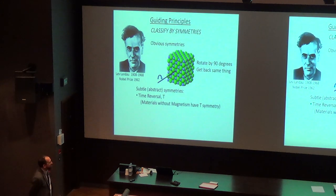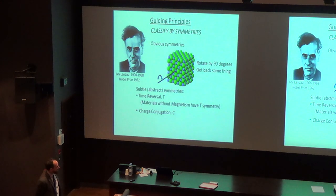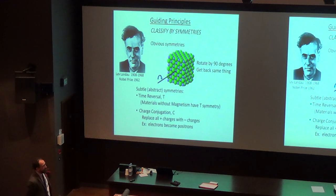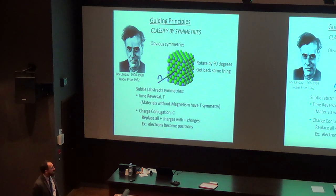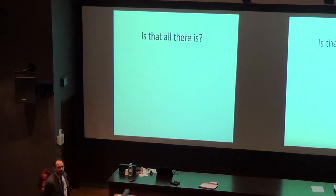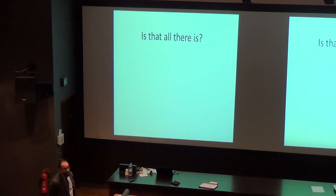In addition to time reversal symmetry, there are other symmetries. One is known as charge conjugation symmetry, called C — basically replacing all positive charges in the material with negative charges, for example if all your electrons turn into positrons. This seems very unnatural, but it turns out that superconductors have this charge conjugation symmetry. So if we're thinking about superconductors, we want to include this symmetry. For many, many years, people thought that symmetry was really all there was to classifying materials. But recently, we've realized there's another guiding principle we should be using, which is topology.